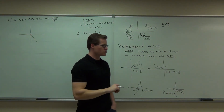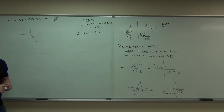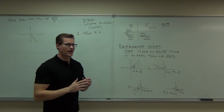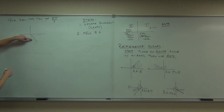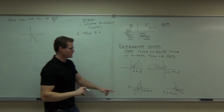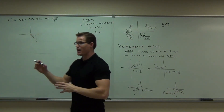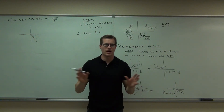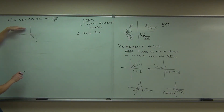Identify your reference angle and shade it in. We want something between the terminal side and the x-axis — not the y-axis. So I shade this little piece in the fourth quadrant — that's my reference angle. We're in the 2 pi minus theta situation. I take 2 pi and subtract my 5 pi over 3. That gives me this shaded region. So the reference angle is 2 pi minus 5 pi over 3.